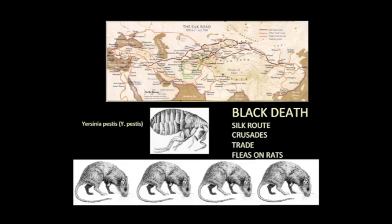Black Death also traveled the Silk Routes. There was a community of Genoese traders by the Crimean Sea, and Genghis Khan — no less an adversary than Genghis Khan — in order to effectively lay siege to their town, threw the dead bodies of bubonic plague victims over the town walls to sicken everyone inside.